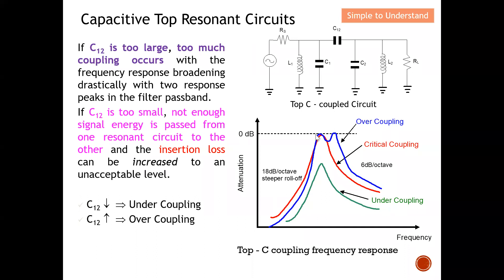Under critical coupling, there is only one peak and it is very close to the 0 dB line. In summary: if C12 is very small, under-coupling occurs with high insertion loss; if C12 is very large, over-coupling occurs with dual peaks in the passband.